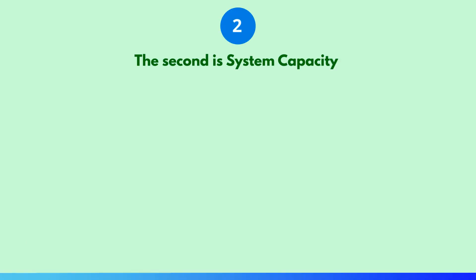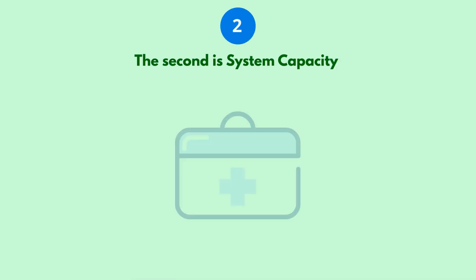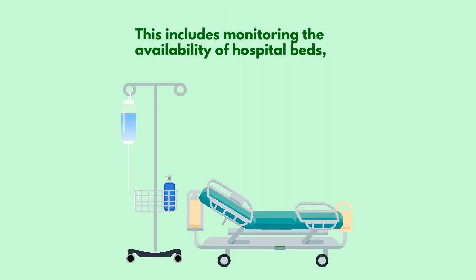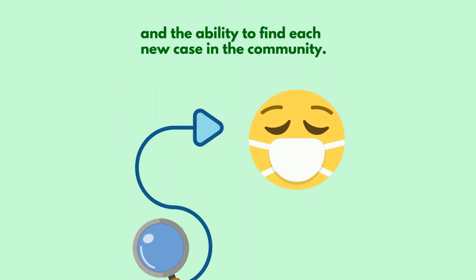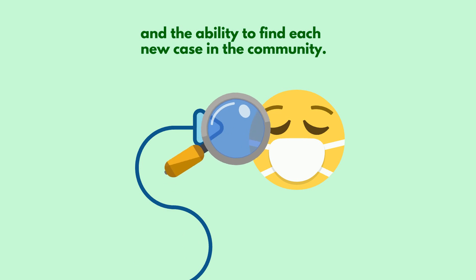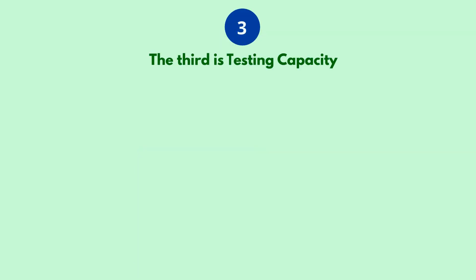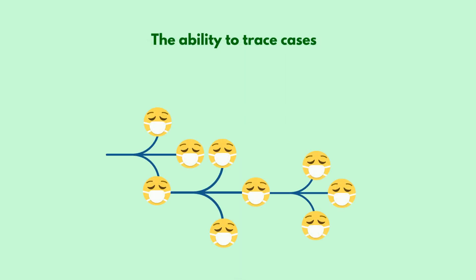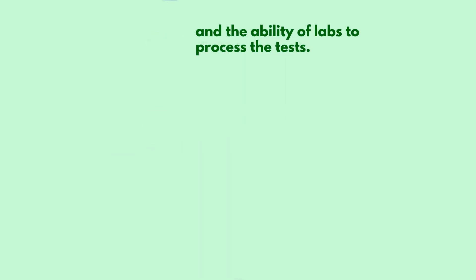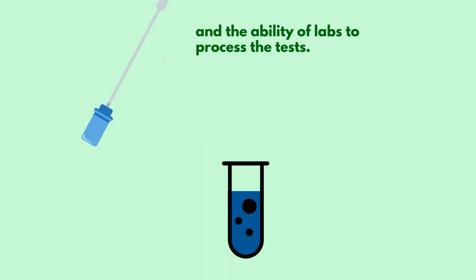The second is system capacity. This includes monitoring the availability of hospital beds and the ability to find each new case in the community. And the third is testing capacity, which includes the number of swabs available, the ability to trace cases, and the ability of labs to process the tests.